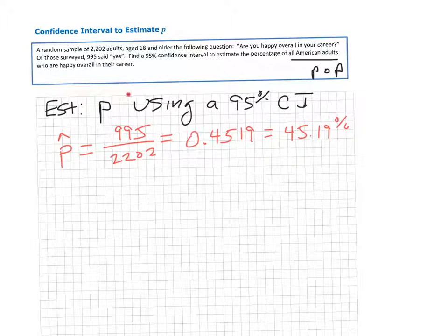To get a range of values that we are quite confident contain this true population proportion, we'll use a confidence interval.